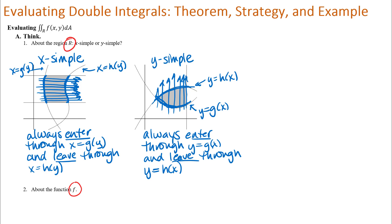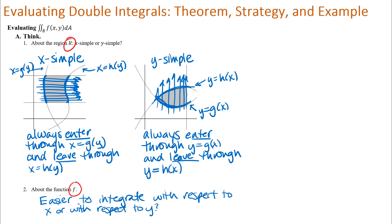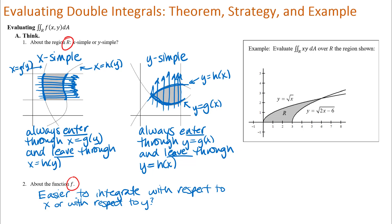The other thing to think about is the function that you're integrating, and whether it's easier to integrate with respect to one variable than the other. For our example, we're going to evaluate a double integral of f(x,y) = xy over the region R shown in the picture. So the two things we need to think about are the function and the region.